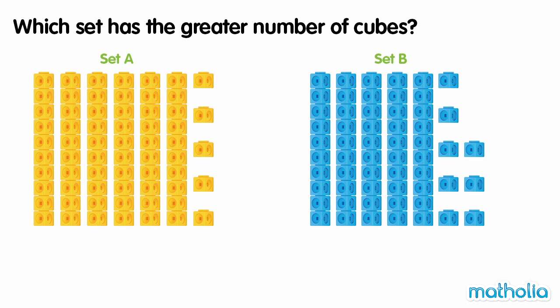Which set has the greater number of cubes? In set A, there are six tens and five ones — there are sixty-five cubes. In set B, there are five tens and eight ones — there are fifty-eight cubes. To compare the numbers,